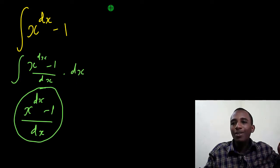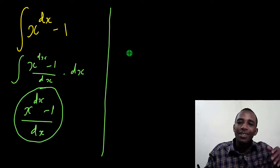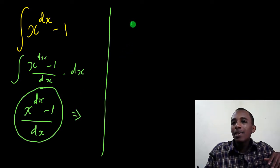If I just take x to power dx minus 1 divided by dx, it turns out that dx represents delta x, a very small element of x, like we've seen in the demonstration. So this is the same as x to power delta x minus 1 divided by delta x.